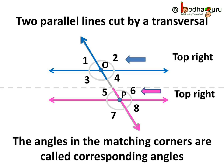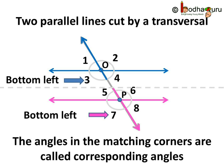Let's see other pairs of corresponding angles. Angle 2 is at the top right of the intersection O. Same way, angle 6 is also at the top right of intersection P. These two angles, angle 2 and angle 6, are in the matching corners and are also corresponding angles. Angle 3 is at the bottom left of the intersection O, and angle 7 is also at the bottom left of the intersection P. These two angles, 3 and 7, are in the matching corners and we say they are corresponding angles.